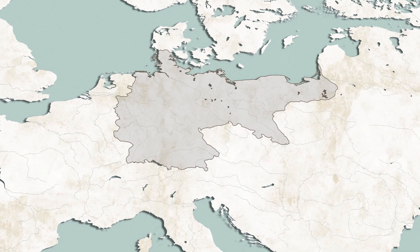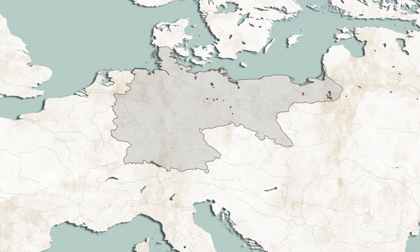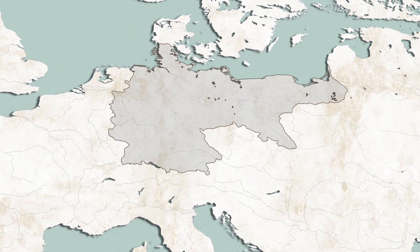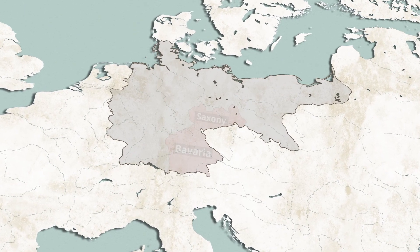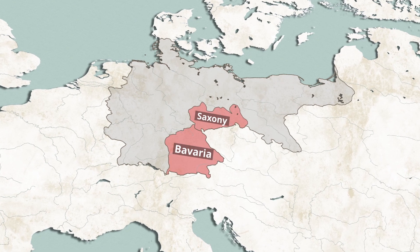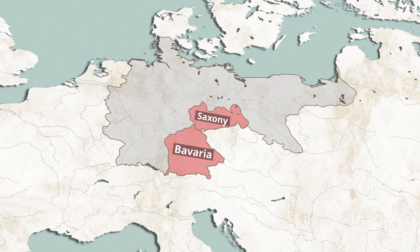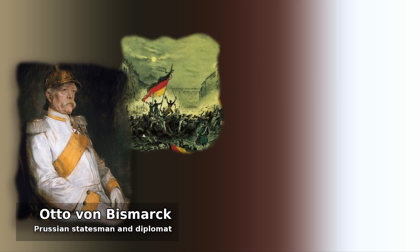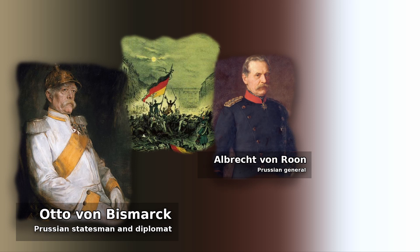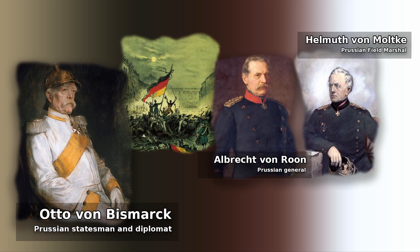Some German states retained their own governments, but the military forces of smaller states fell under Prussian control. The larger states like Bavaria and Saxony maintained some autonomy, but had to coordinate with Prussia. Although Bismarck had led the transformation of Germany from a loose confederation into a federal nation-state, he had not done it alone. The impact of the 1848 liberals and the importance of von Roon's military reorganizations and von Moltke's strategic brilliance all played a part in political unification.